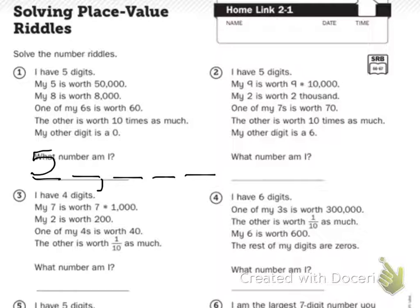So now I have to find my thousands place. Ones, tens, hundreds, thousands. One of my sixes is worth 60, so I need to find the tens place. Ones, tens. My other digit is worth ten times as much. So 60 times 10 equals 600. So ones, tens, hundreds. My other digit is zero. So your answer for number one is 58,660.